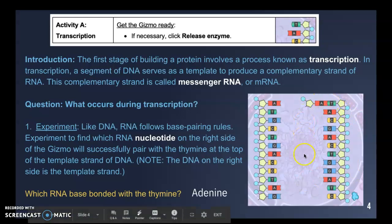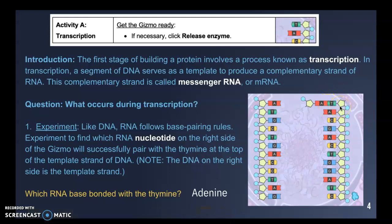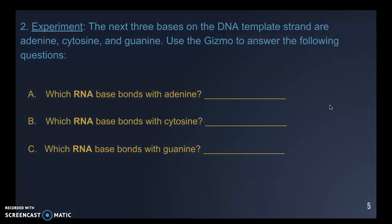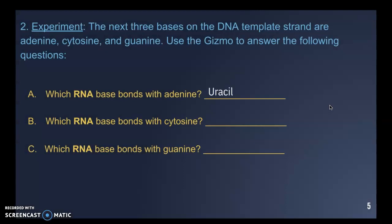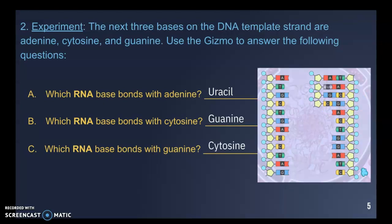From the base pairing rules, T will always pair with A, so only adenine would fit with thymine. As you go through the strand: the A base pairs with U (uracil), cytosine pairs with guanine, and guanine pairs with cytosine. Those are the base pairing rules when building an mRNA strand from DNA.